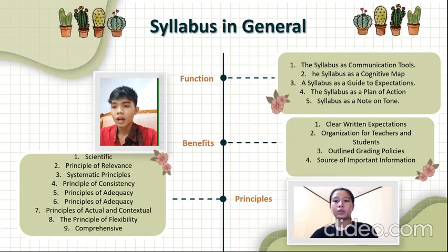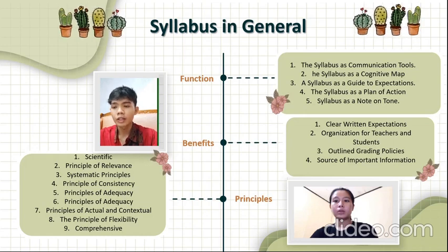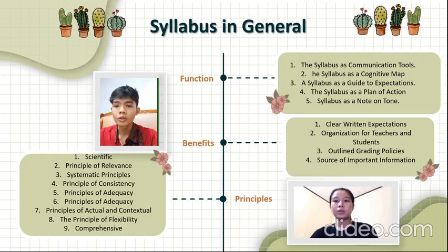Number three, outline grading policy. One of the most common struggles between the professor and student is over the grading policy and fairness throughout a course. Use your syllabus to outline your grading policy so that everyone has a clear understanding. Use the syllabus to communicate with your student about how you will grade, including rubrics, your full list on curving, and information about how each assessment throughout the course will be weighed.